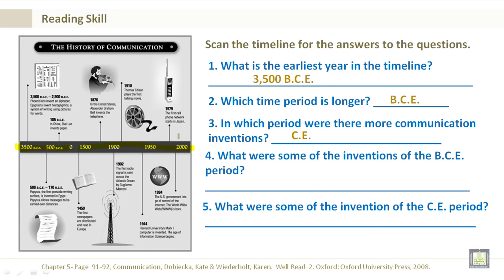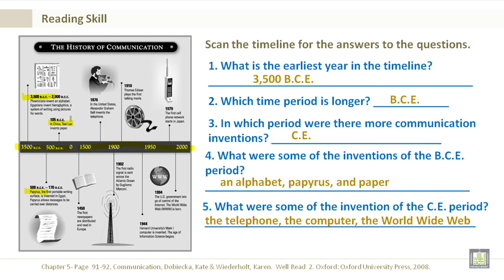What were some of the inventions of the BCE period? We have an alphabet, papyrus — which is like paper — and paper. What were some of the inventions of the CE period? This is after 0. That would be the telephone, the computer, and the World Wide Web.